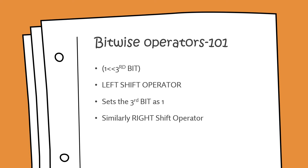The third bitwise operator important in this context is the left shift operator. Its syntax is as shown here. So if I do 1 left shift 3rd bit, then the 3rd bit gets set as 1 and all the other values are 0. Similarly, we have a right shift operator. Now we will see the use of these operators in setting the desired prescaler value.